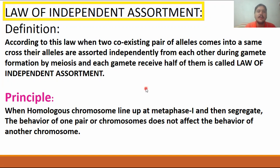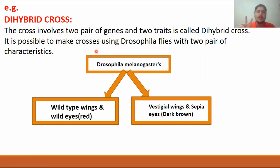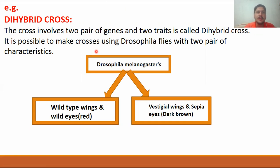This behavior is called the law of independent assortment. We explain this using the dihybrid cross. Mendel crossed two pairs of genes and two traits. The law of segregation involved a single trait with a single pair of genes, but the dihybrid cross involves two pairs of genes. Drosophila melanogaster is the best example of this law of independent assortment.